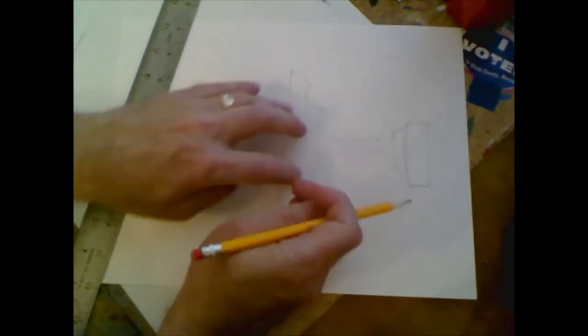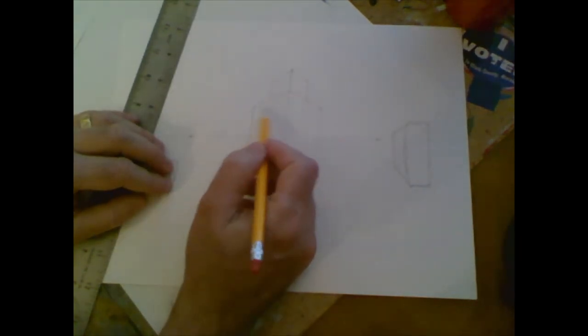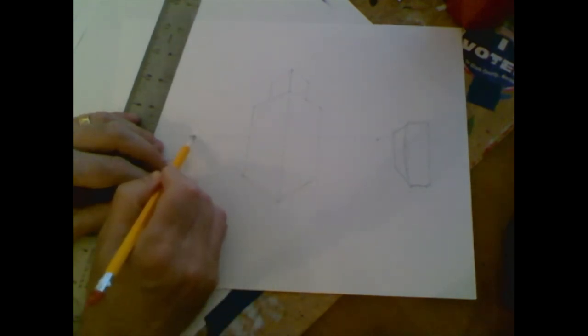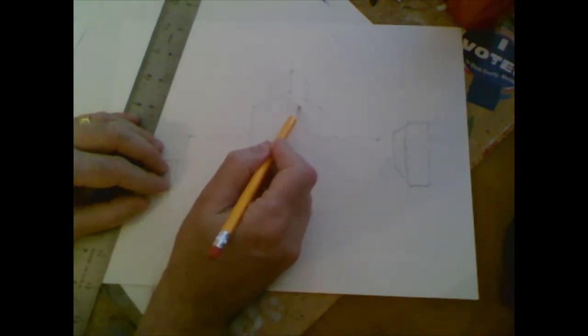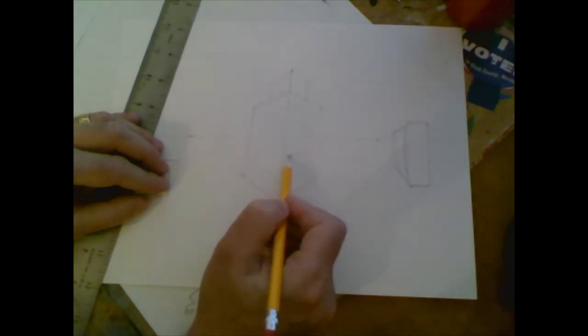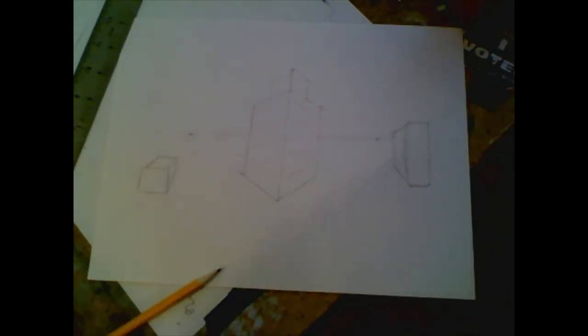Anything on this side is going to head towards that vanishing point. If I wanted to draw lines on this side, it's going to head towards this vanishing point. So it's going to head that way. And that's how you do a two point perspective cube.